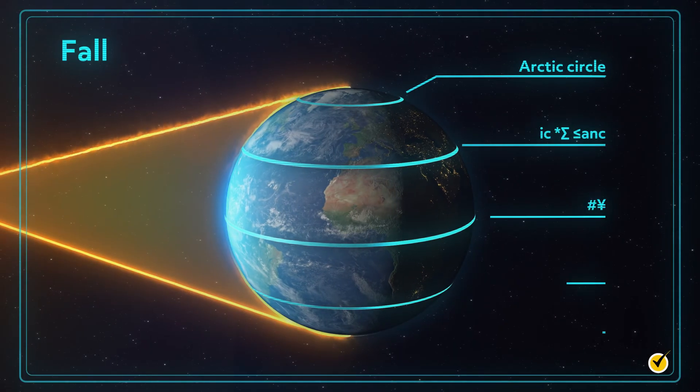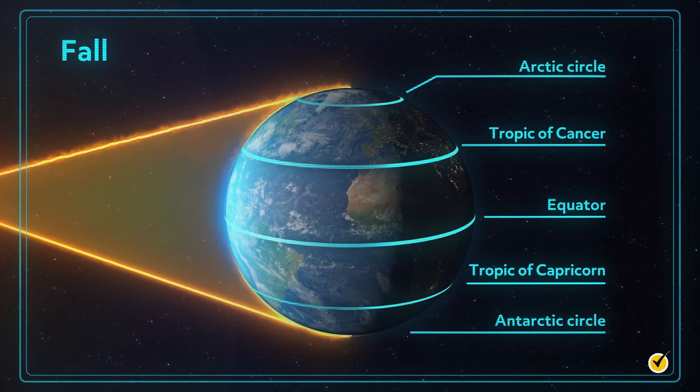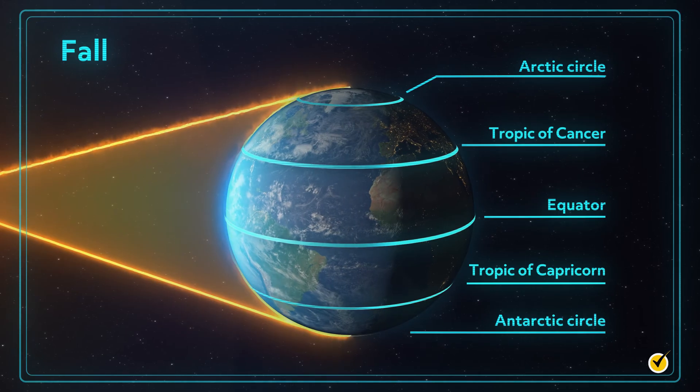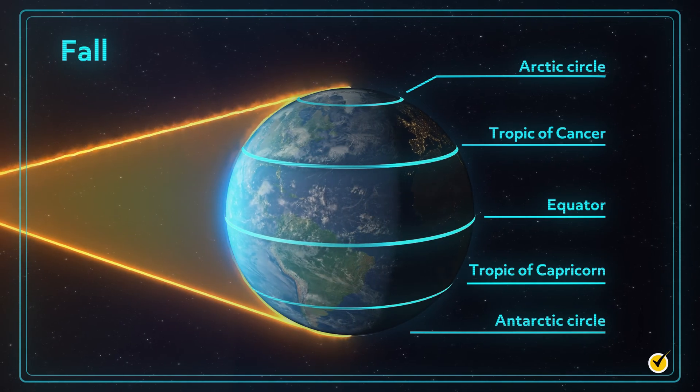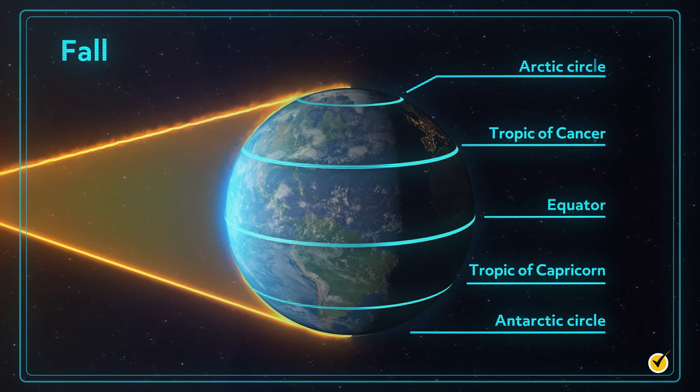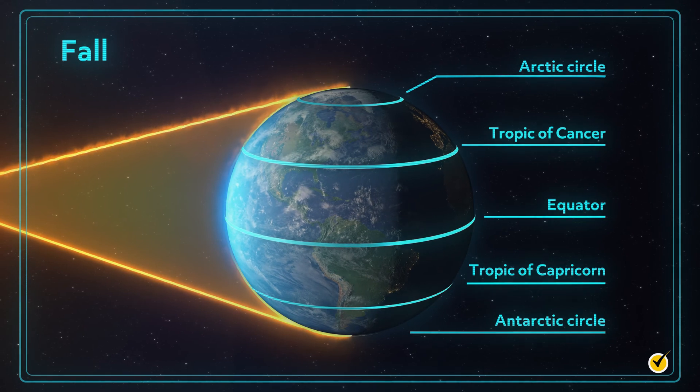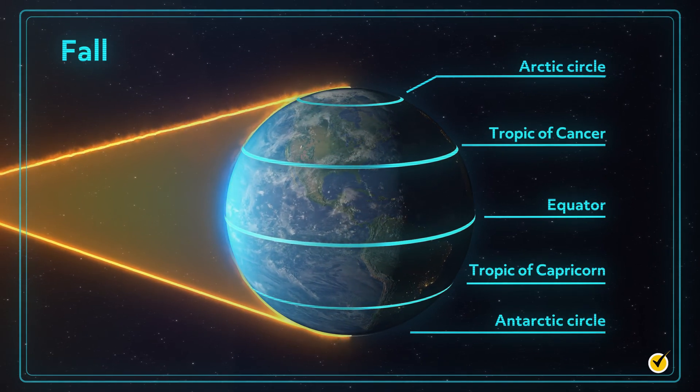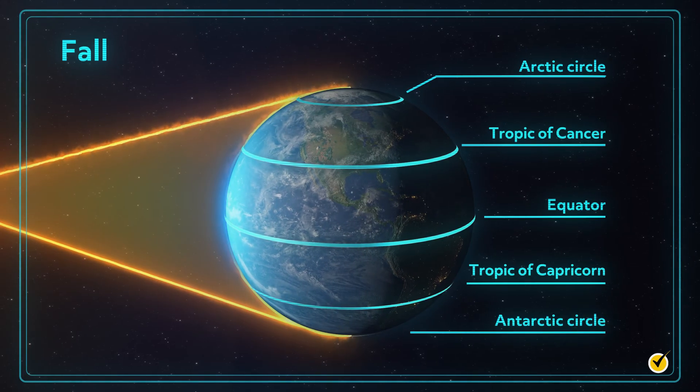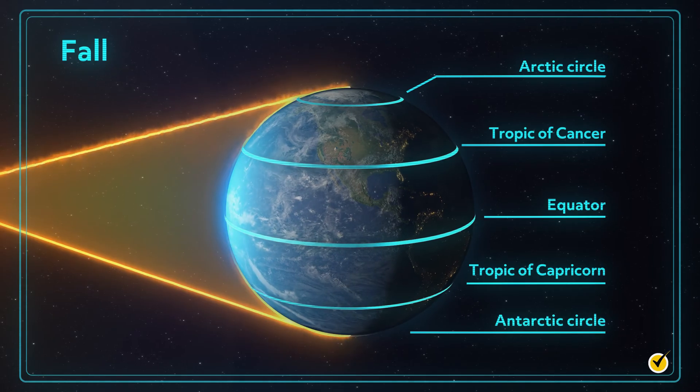Now, let's talk about fall. Looks the same as the vernal equinox, right? That's because this is the autumnal equinox. Again, the Earth is neither tilted toward or away from the Sun, but more on its side, so all areas of the globe receive equal amounts of daylight and darkness. Once again, the equator receives the most direct concentrated sunlight.